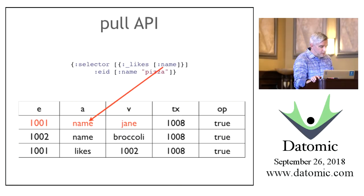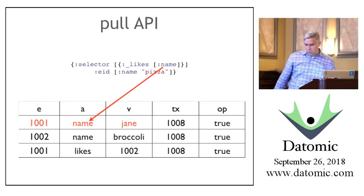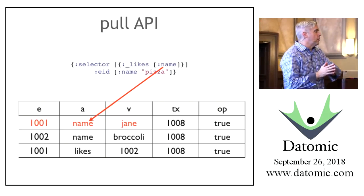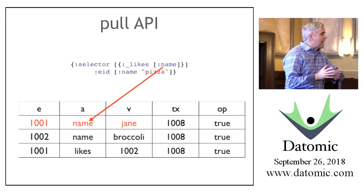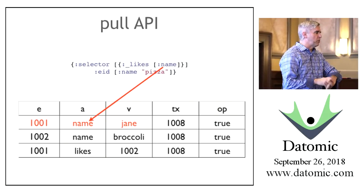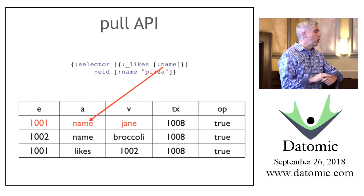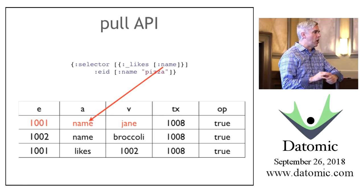What are the performance implications of using entity IDs and reverse navigation? Reverse navigation is exactly as performant as forward navigation because they're both always governed by an index. So there's no performance concern about that really at all.